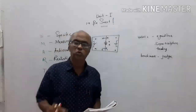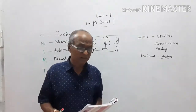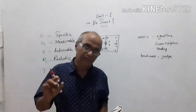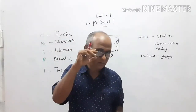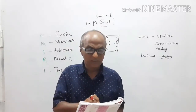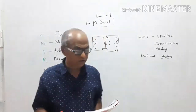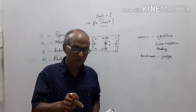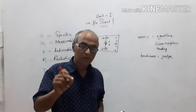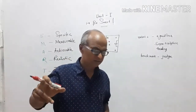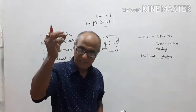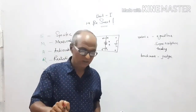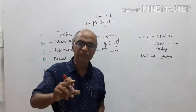The third point in SMART goals is Achievable. Goals must be achievable — that is, they can be completed within the designed period of time. Often these goals may act like stepping stones to help meet broader goals that further define one's career.